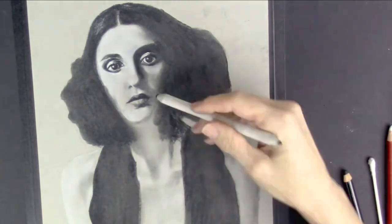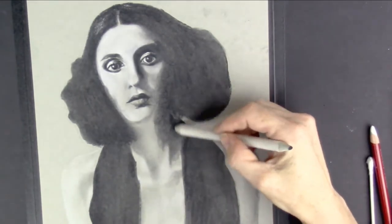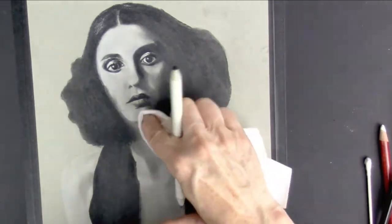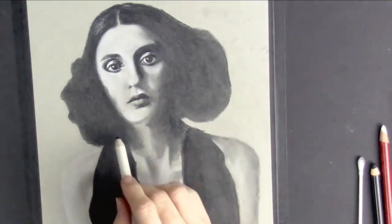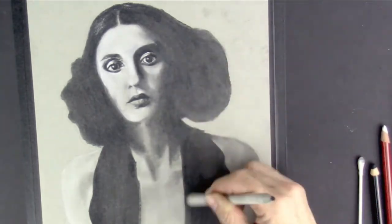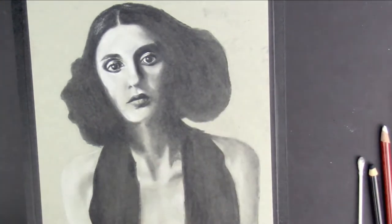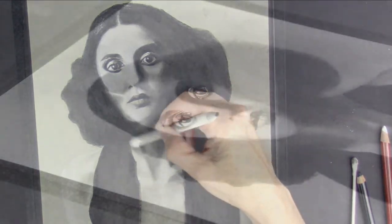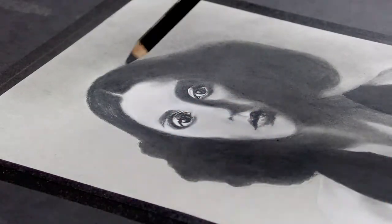I just only used the tissue, the cotton tip, and the larger blending stump. We can be a bit more assertive and aggressive with our shadows now because we're putting in the next, second and final layer.